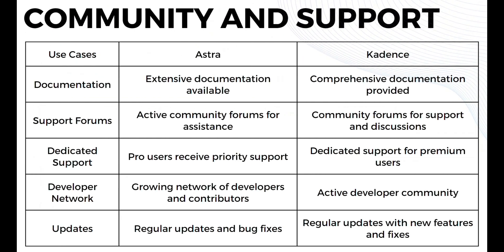Moving on to the community and support comparison — in terms of documentation, Astra offers extensive documentation while Cadence provides comprehensive documentation. For support forums, Astra has active community forums for assistance while Cadence has community forums for support and discussions. For dedicated support, Astra's pro users receive priority support while Cadence has dedicated support for premium users. In terms of developer network, Astra has a growing network of developers and contributors while Cadence has an active developer community. Both platforms also provide regular updates and bug fixes, with Cadence additionally rolling out new features.